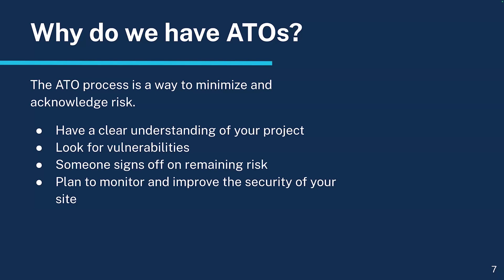Why do we have ATOs? There's no perfect risk-free system. The ATO process is aimed at minimizing and managing risk responsibility. ATOs can have a bad rap because they can feel very bureaucratic, but they can also be a good opportunity to take stock of what you have and how to make it better. As an example, I'm going to refer to the GSA-18F process. This includes documentation, penetration testing or pen testing, signing an ATO — authority to operate — and a POAM, plan of action and milestones, which is a plan to monitor and improve the security of your site.